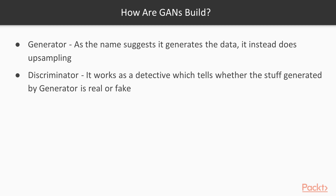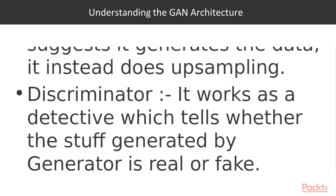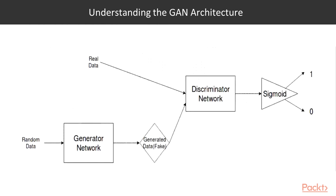Let's take a peek into the architecture of GANs. Here you can see we are passing random data to the Generator network and we get generated data — that is the fake dataset. The Discriminator network receives real data as well as the fake dataset. There's an activation function that gives the value 1 if it figures out that the data is real, and 0 if it figures out the data is fake. Whenever an iteration happens, this Discriminator information is sent back to the Generator using the loss function and backpropagation.